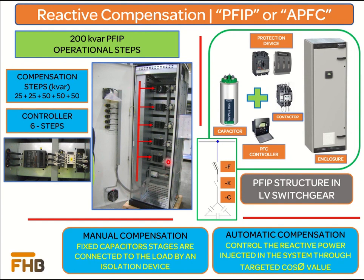For example, to make a 200 kVAr PFIP, we consider 5 stages — the first two stages of 25 kVAr and the next three stages of 50 kVAr. Each stage is connected to the load bus bar through cable connection. The power factor controller is installed at the door of the PFIP and is commonly available in 6-stage or 12-stage versions. Since our requirement is 5 stages, we use a 6-stage controller. Compensation can be done in manual mode, where the operator manually connects stages, or in automatic mode, where the controller monitors reactive power demand and connects stages by itself.